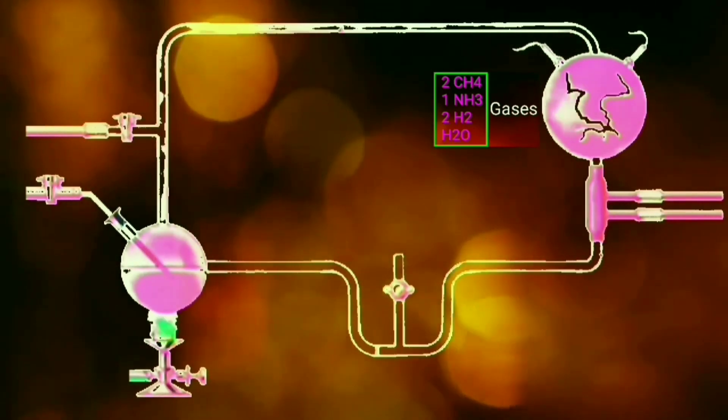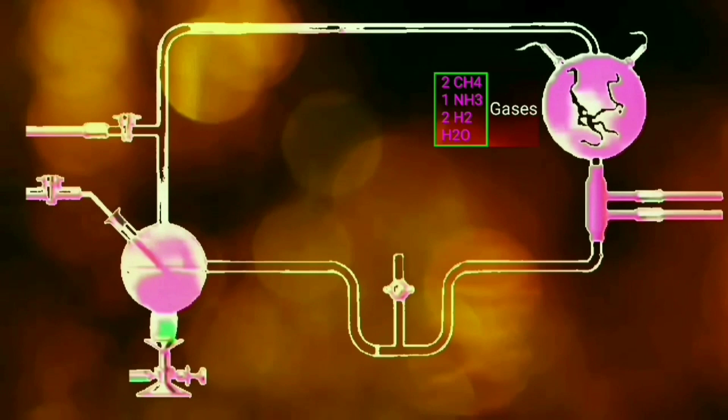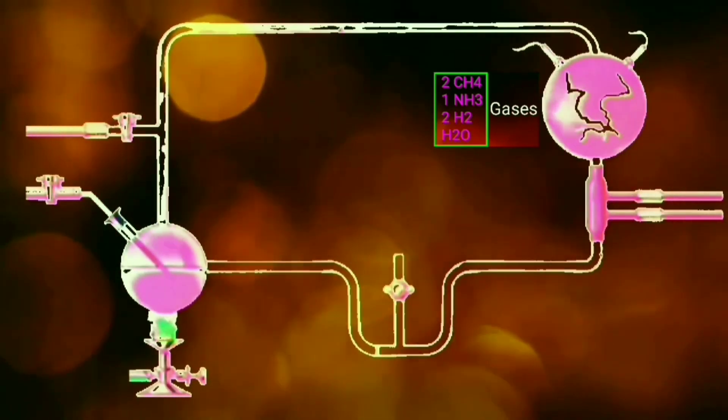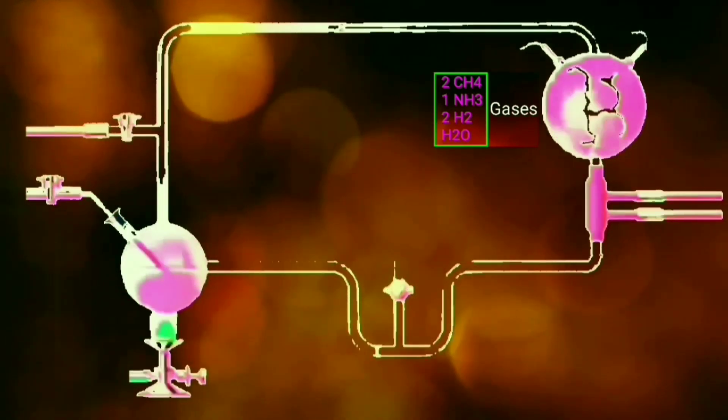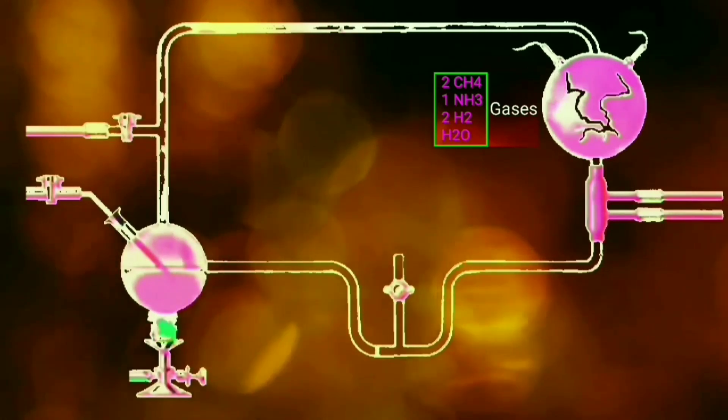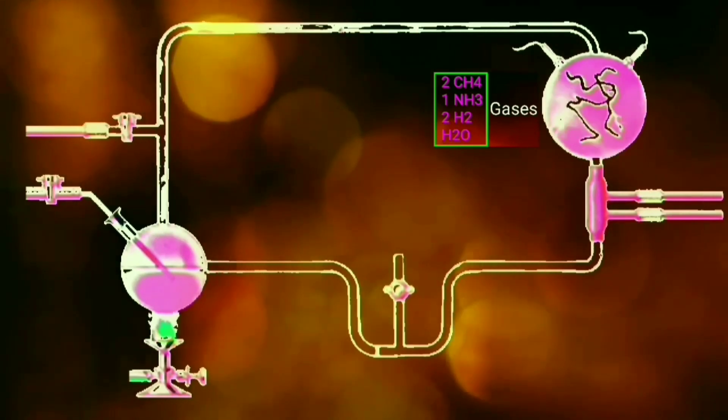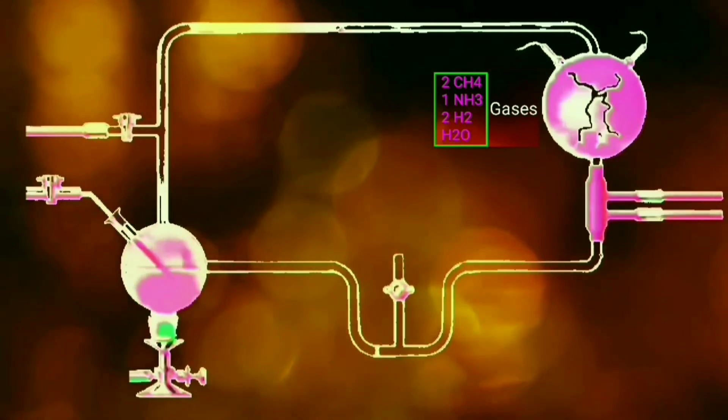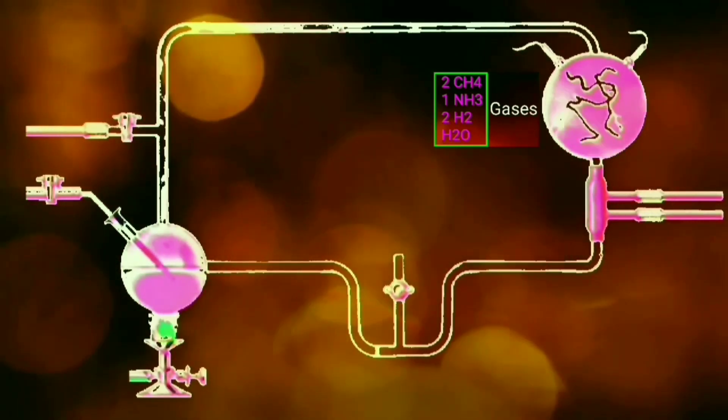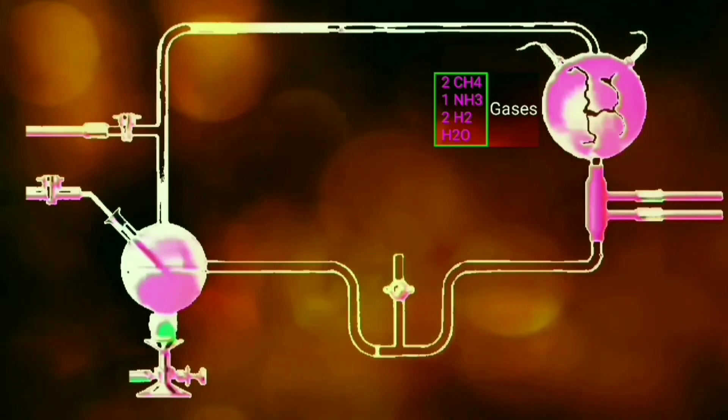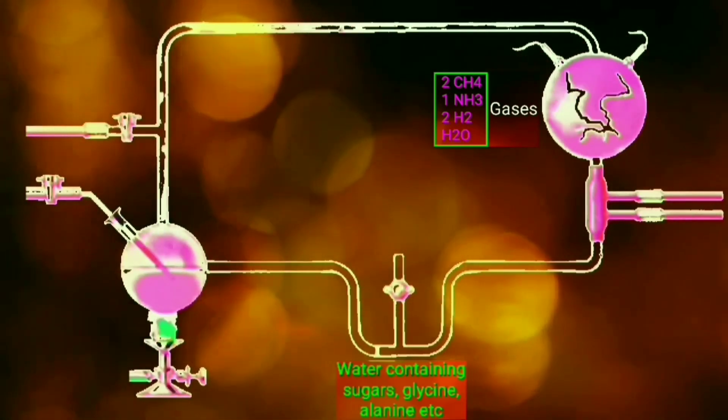The electric spark mimicked lightning in the primitive earth atmosphere. While passing through, the mixture gases were passed through a liquid flask to simulate the volcano. The mixture was collected from the stopcock or U-trap and analyzed using chromatographic techniques.